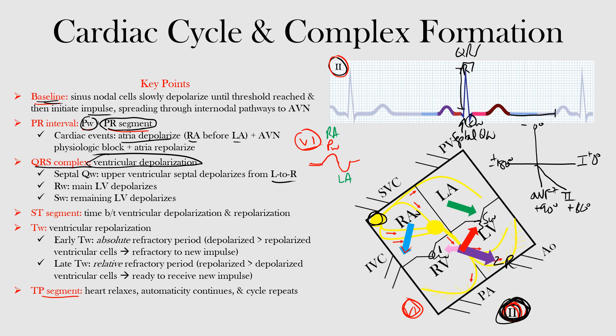Did you notice that we didn't mention the right ventricle when discussing the QRS complex? In adults, the left ventricle's mass is much greater than that of the right ventricle, such that it makes the impulses from the right ventricle appear insignificant, and the QRS complex represents mostly left ventricular activity. In infants and young children this would not be the case — the right ventricle acts as the dominant ventricle in the last trimester of pregnancy. It is not until the end of the first month of the newborn's life that the left ventricle begins to become dominant again, and over time the electrical axis shifts leftward.